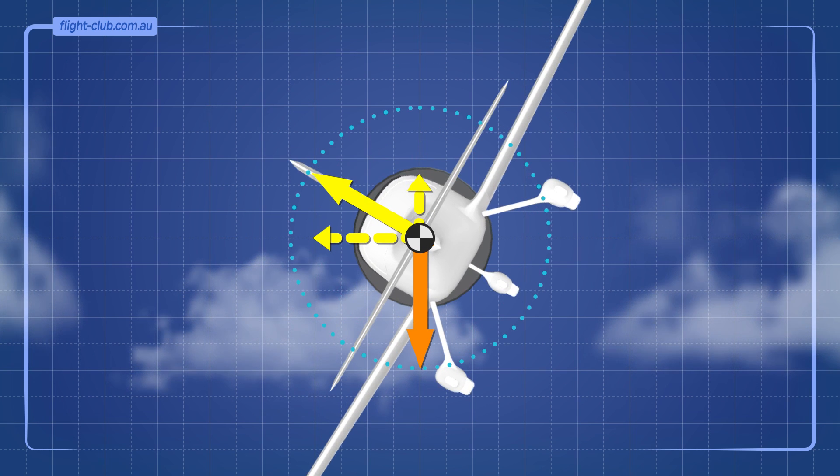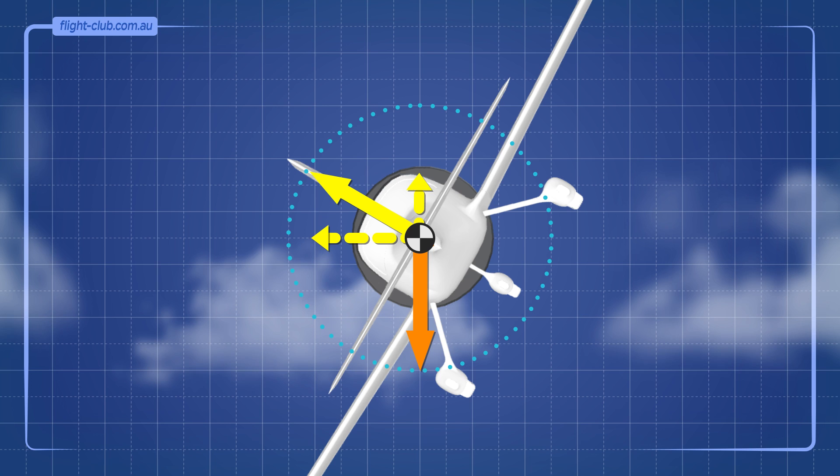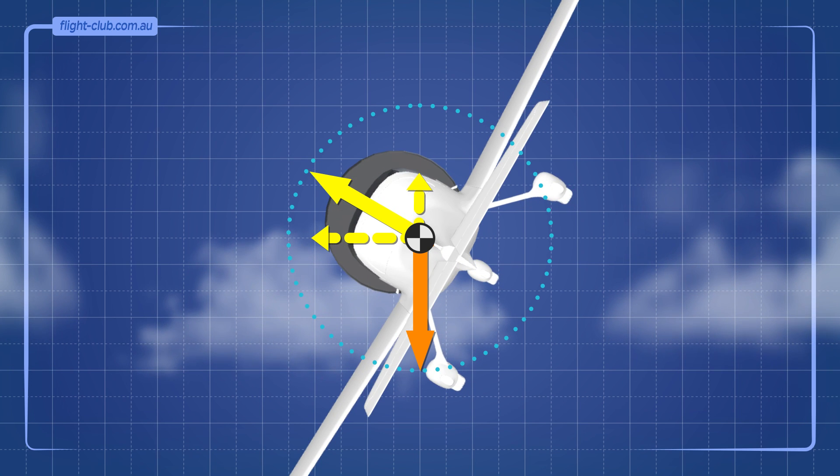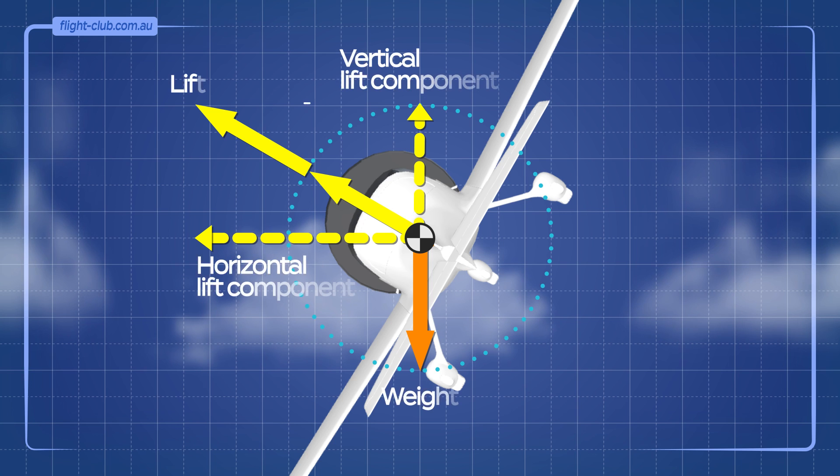To maintain altitude, the vertical lift component must be greater. By pulling back on the controls, the wings generate more lift. To achieve a 60 degree angle of bank balance turn, the lift must be doubled. Now the vertical lift component is equal and opposite to weight and the aeroplane maintains its altitude.